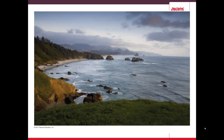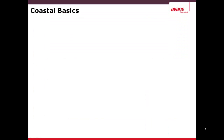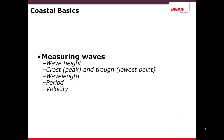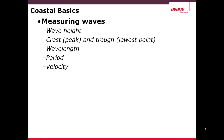In this picture you see a typical coastline with some of the features mentioned. A few coastal basics including the measuring of waves. This is the wave height — the distance between the crest and the trough, the crest being the peak and the trough being the lowest point. The wavelength is the distance between the same point on a wave. The period is how often a wave passes a certain point. And the velocity is how quickly a wave travels.